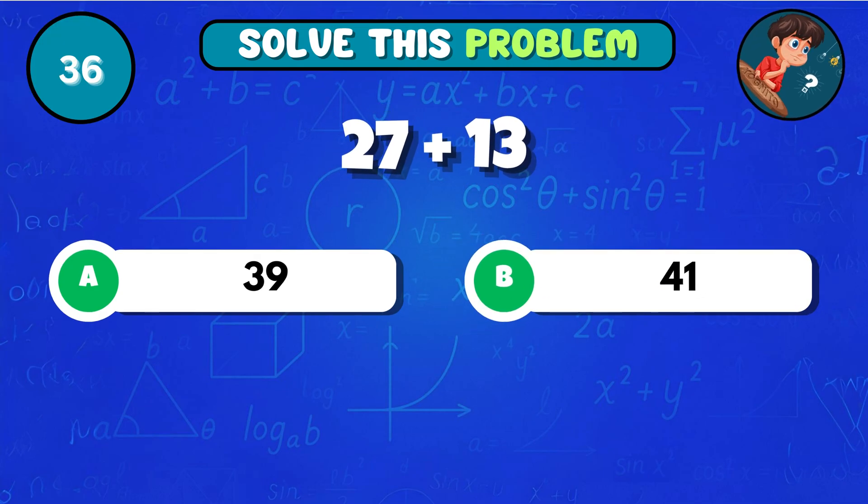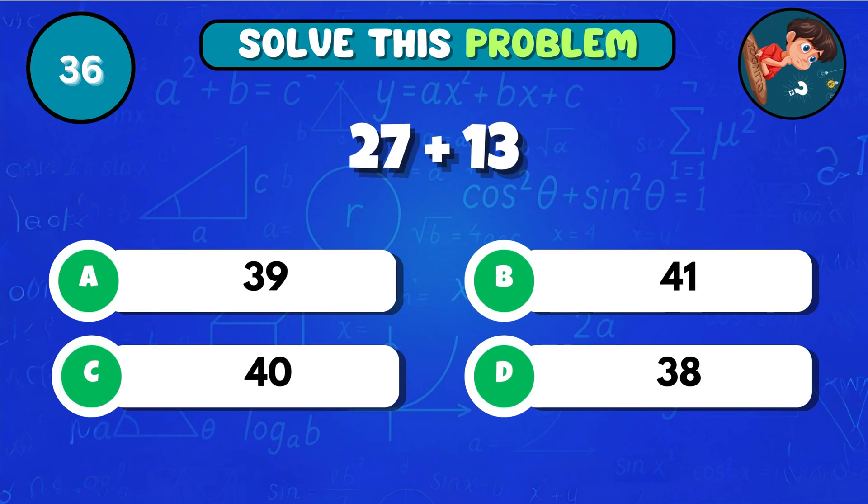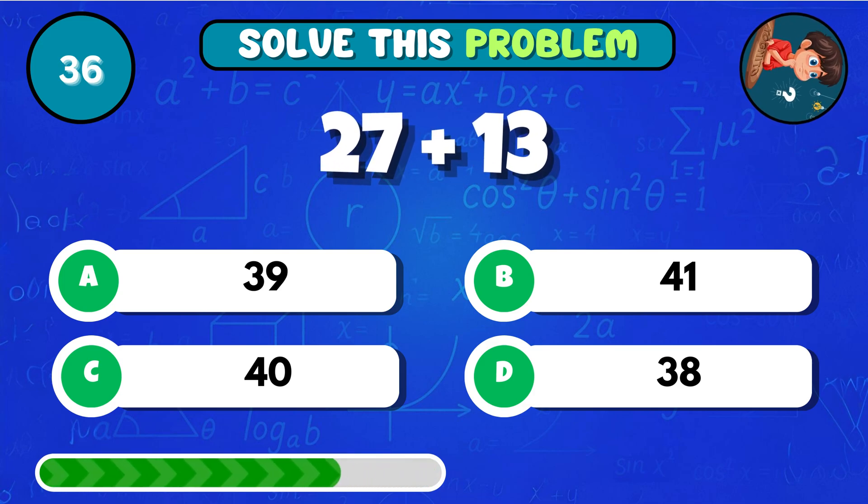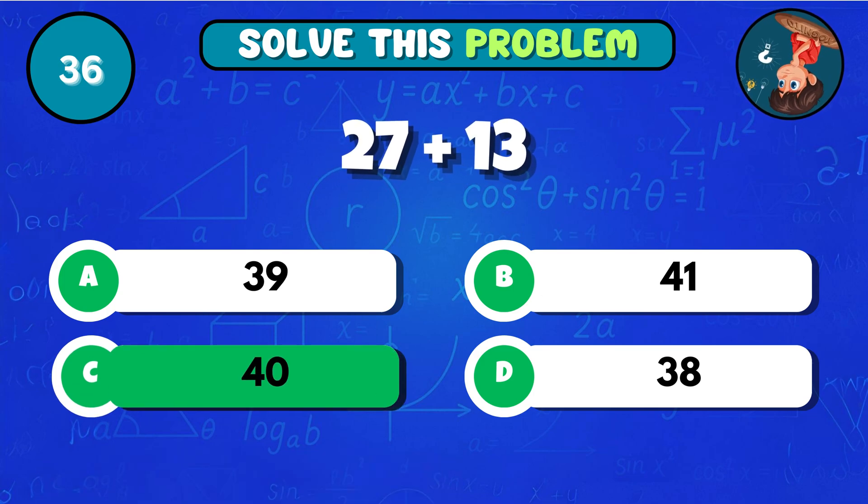What's the sum of 27 and 13? That makes C 40!